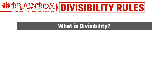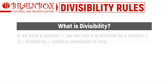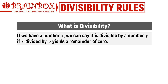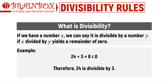Let's start by defining divisibility. If we have a number x, we can say it is divisible by a number y if x divided by y yields a remainder of zero. For example, 24 divided by 3 gives us a quotient of 8 and a remainder of 0. Therefore, we can say that 24 is divisible by 3.